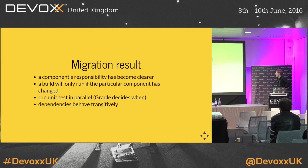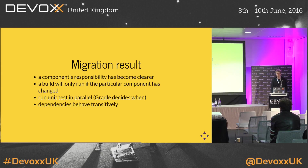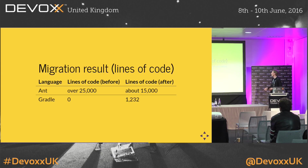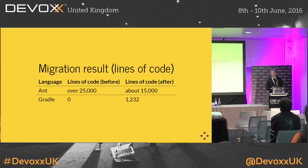So what's the result of this migration? If someone starts on our team, the responsibility of a component has become much more clear. A build will only run if a particular component has changed. Gradle decides when to run unit tests in parallel, so the build runs quicker, and dependencies behave transitively — no more multiple jar files with multiple versions. In hard numbers: we replaced a little over 10,000 lines of Ant code with 1,200 lines of Gradle code that do exactly the same — quite an improvement in verbosity. The remaining Ant code we use infrequently, and we're still planning to migrate it if we can confirm it will help us gain performance.